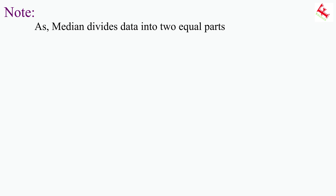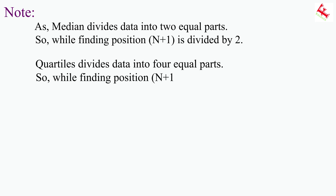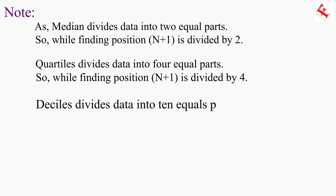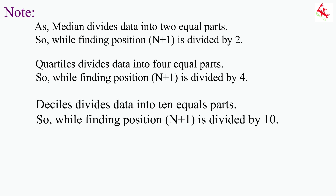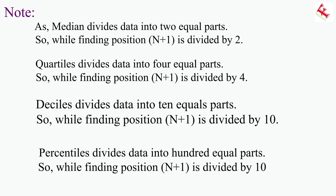Note: As median divides data into two equal parts, while finding its position, (n+1) is divided by two. Quartiles divide data into four equal parts, so (n+1) is divided by four. Deciles divide data into ten equal parts, so (n+1) is divided by ten. Similarly, percentiles divide data into hundred equal parts, so (n+1) is divided by hundred.